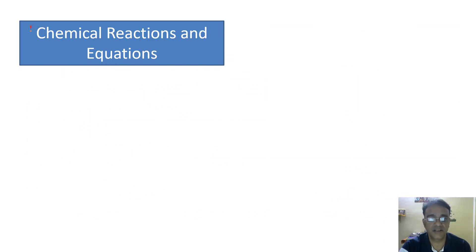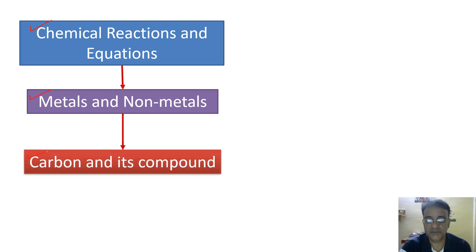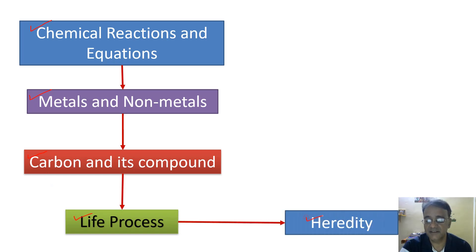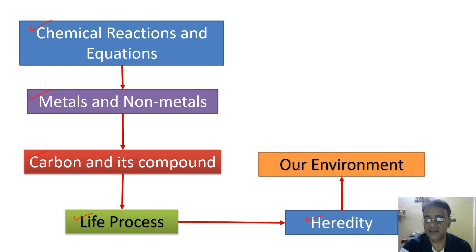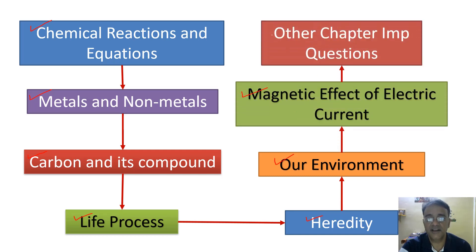The recapitulation order: first Chemical Reactions and Equations, then Metals and Non-metals, Carbon and Its Compounds, Life Processes, Heredity, Our Environment, Magnetic Effect of Electric Current, and then other chapters with important questions — which I will discuss right now.